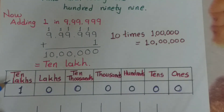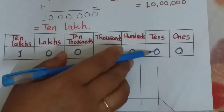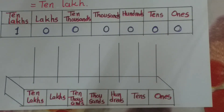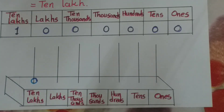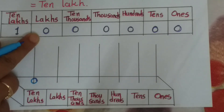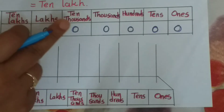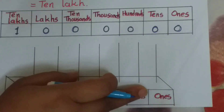Now we will see 10 lakh on the abacus. Place values: 10 lakhs, lakhs, 10,000s, thousands, hundreds, tens, ones. On the 10 lakhs place, 1 is there — so put 1 bead here. On the lakhs place, 0 — no bead. On 10,000s place, 0 — no beads. On 1,000s place, 0 — no beads. On hundreds, 0 — no beats. On tens, 0 — no beats. On ones, 0 — no beats. So your number is 10 lakh.